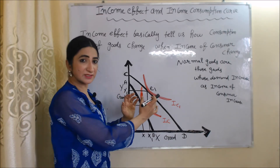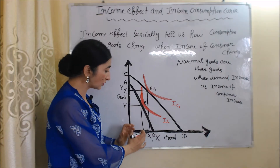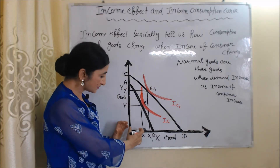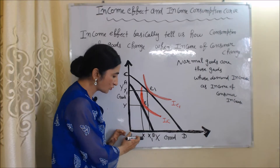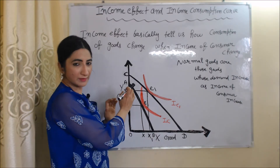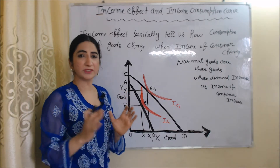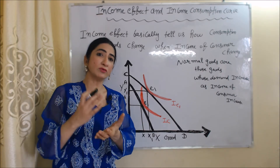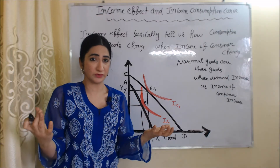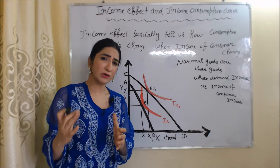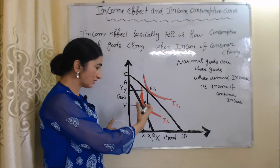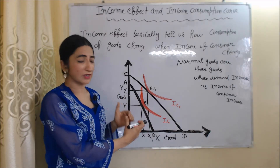You can see that as income increases, the consumer increased demand for both goods — X good as well as Y good. Demand for X good increased from OX to OX1, and demand for Y good increased from OY to OY1. This is because X and Y are both normal goods, and normal goods are those goods whose demand increases as the income of the consumer increases — for example, clothing, home appliances, and electronics.